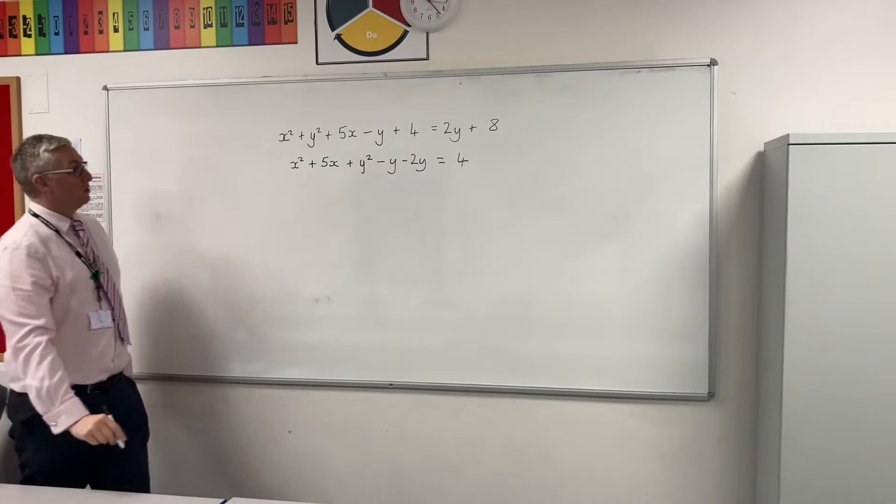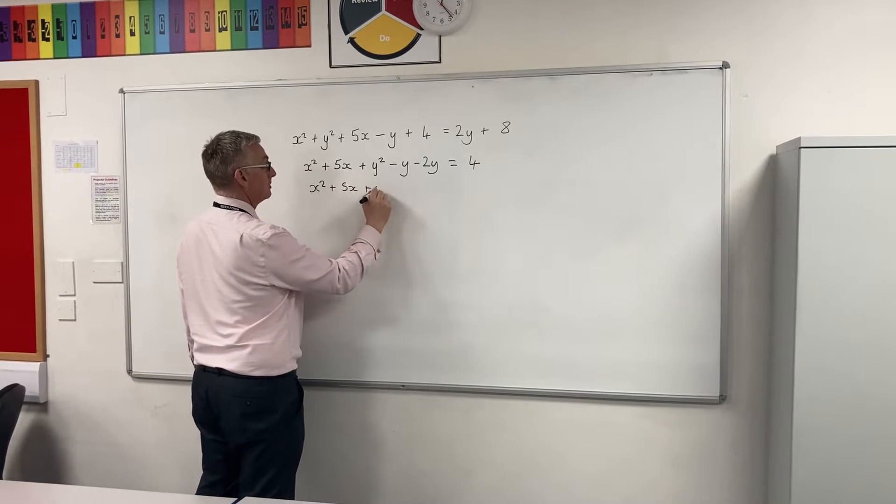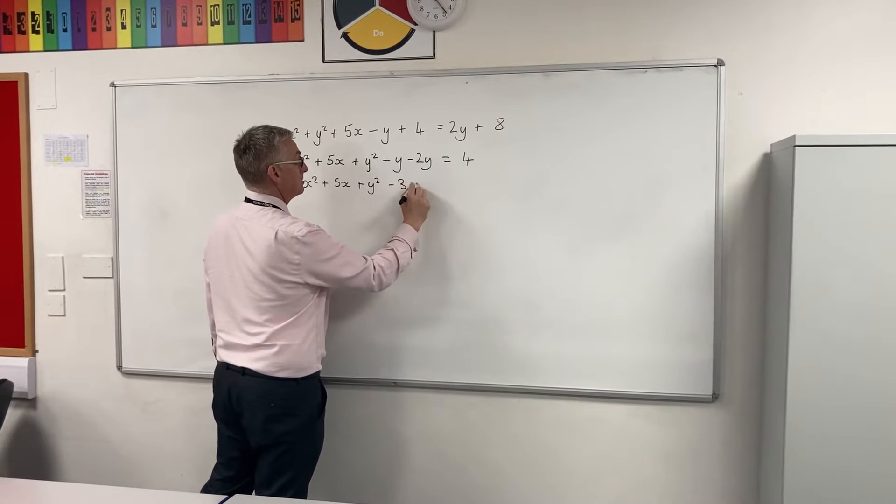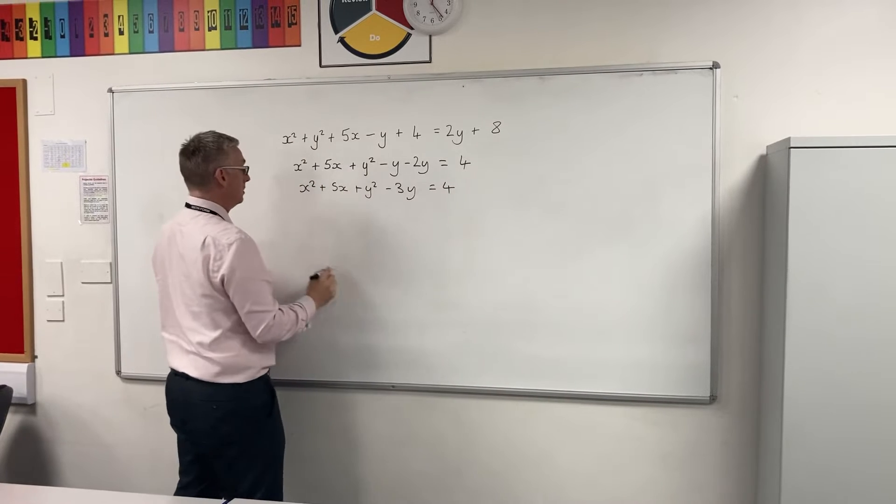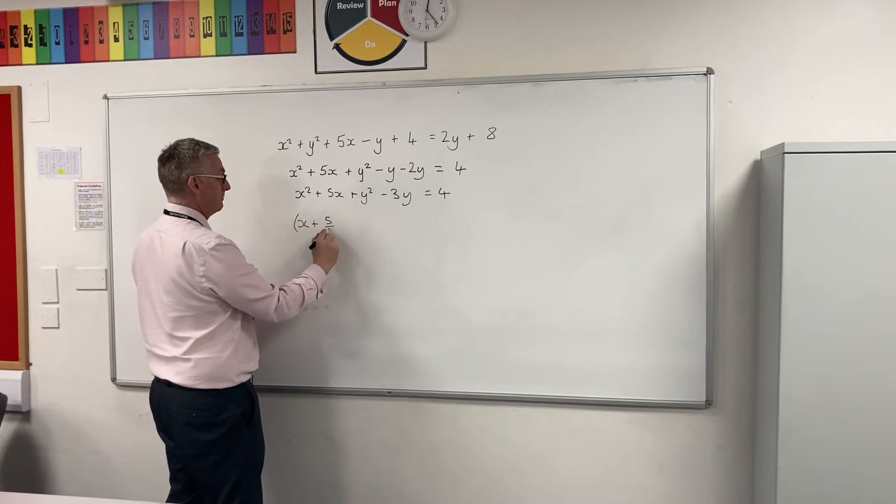Now, what I then need to do is quickly simplify. Minus 3y equals 4, so I'm going to complete the square, half of that, 5 over 2.